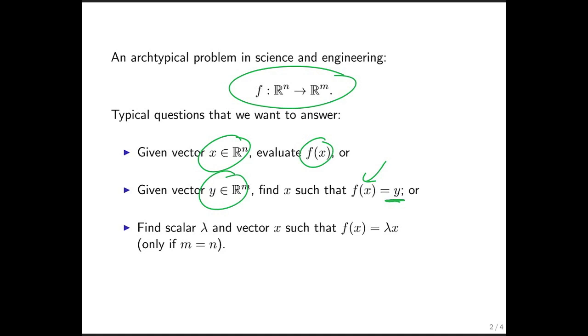Another very important problem, which is known as an eigenvalue problem, is where you're given a function f, and what you would like to know is when f(x) is equal to some scalar times x. Now, what does that mean? What it means is you would like to know when it's the case that applying the function f to a vector x acts as if you simply scaled the vector x. This is known as an eigenvalue problem.